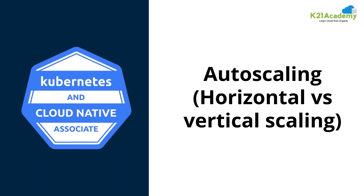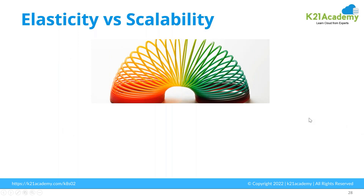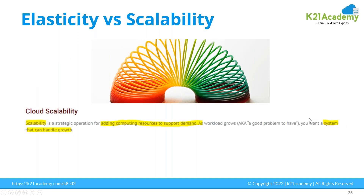Moving on, let's talk about auto scaling — we've been talking about scalability throughout this training. Kubernetes has a feature of auto scaling. We'll discuss why we need auto scaling, and also the two types of scaling: horizontal scaling and vertical scaling.